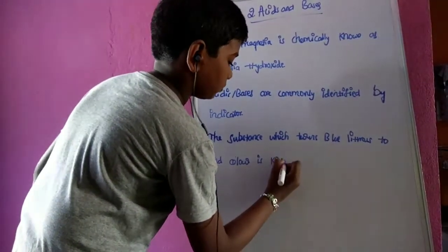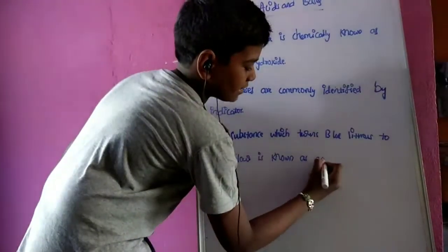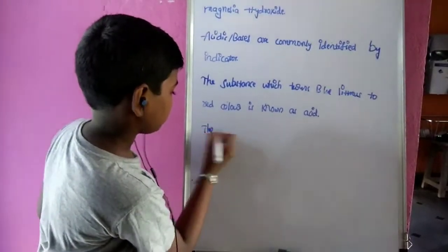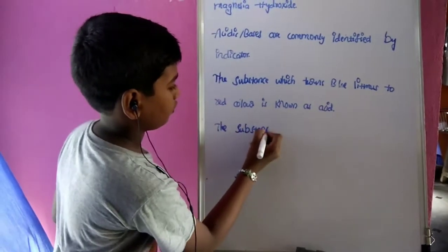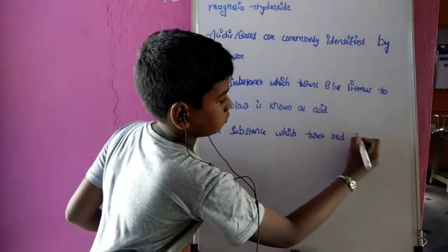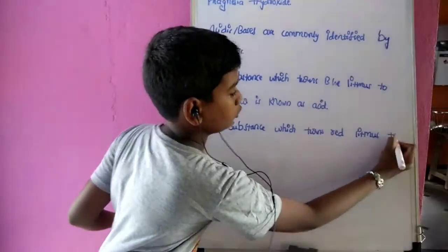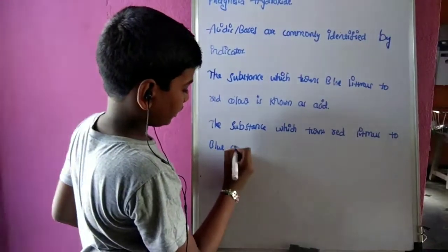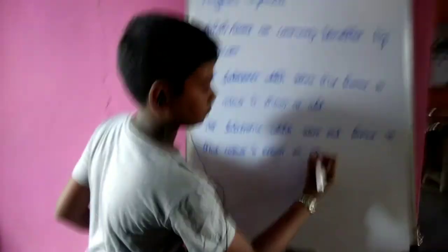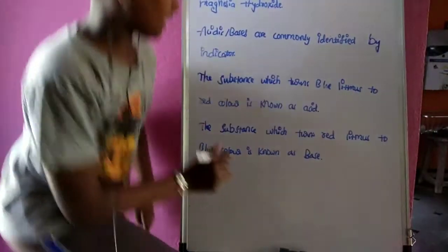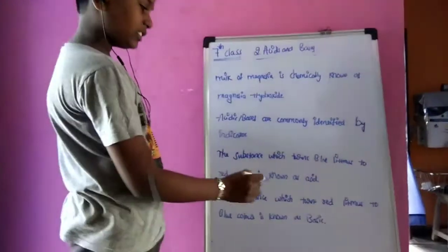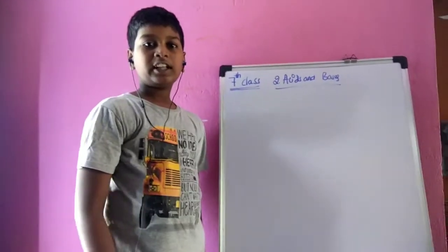And the substance which turns red litmus to blue color is known as base. Let us do one experiment.